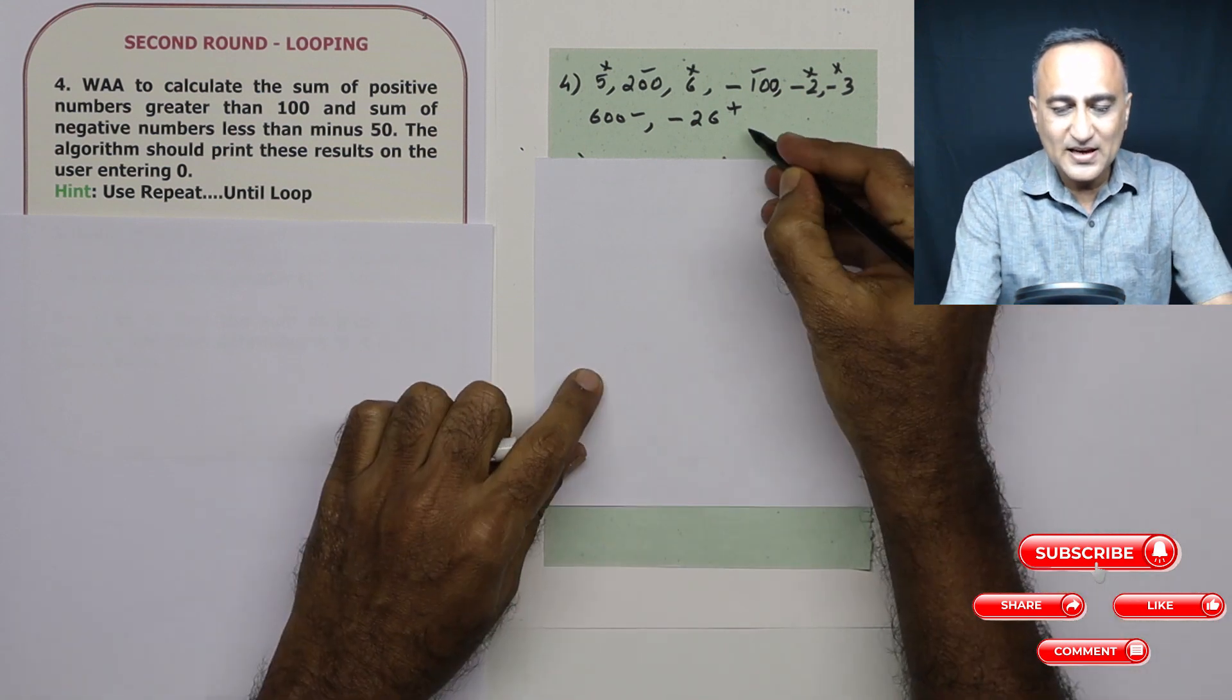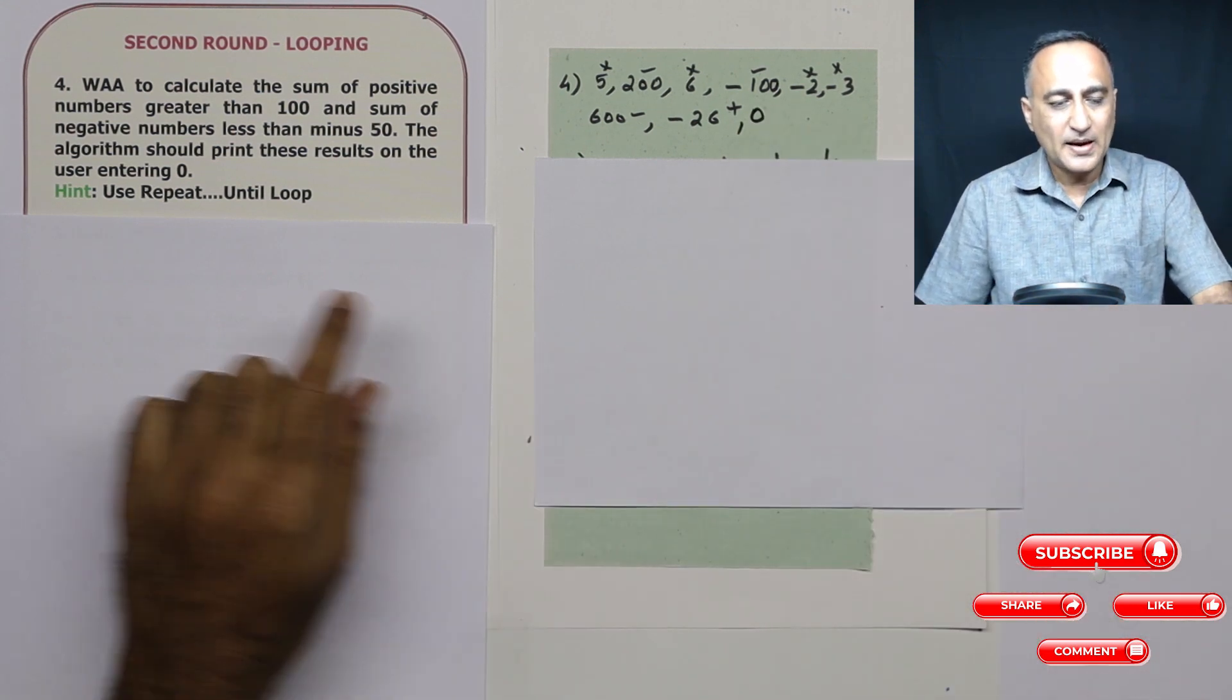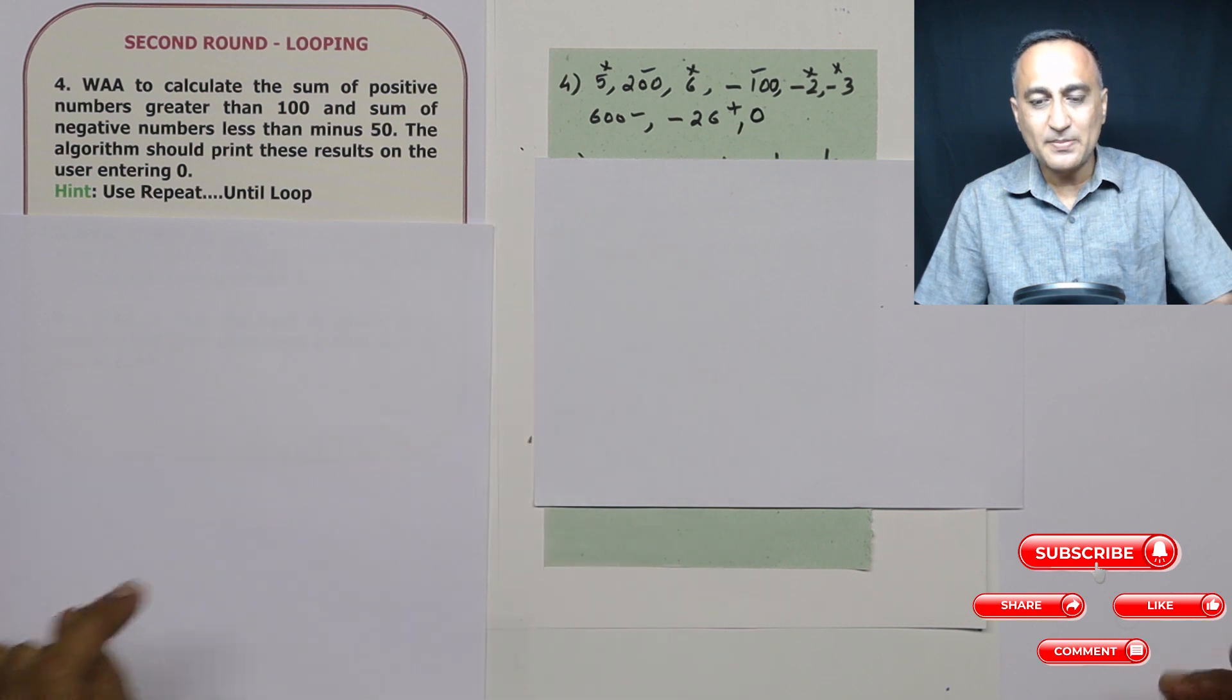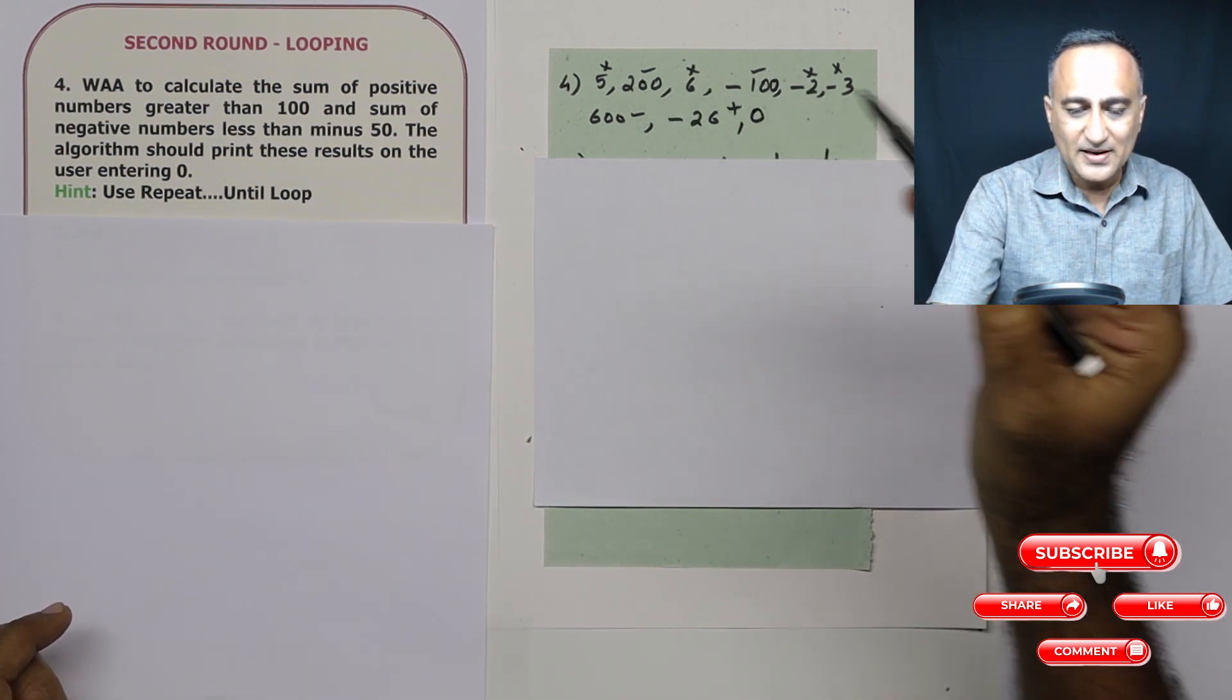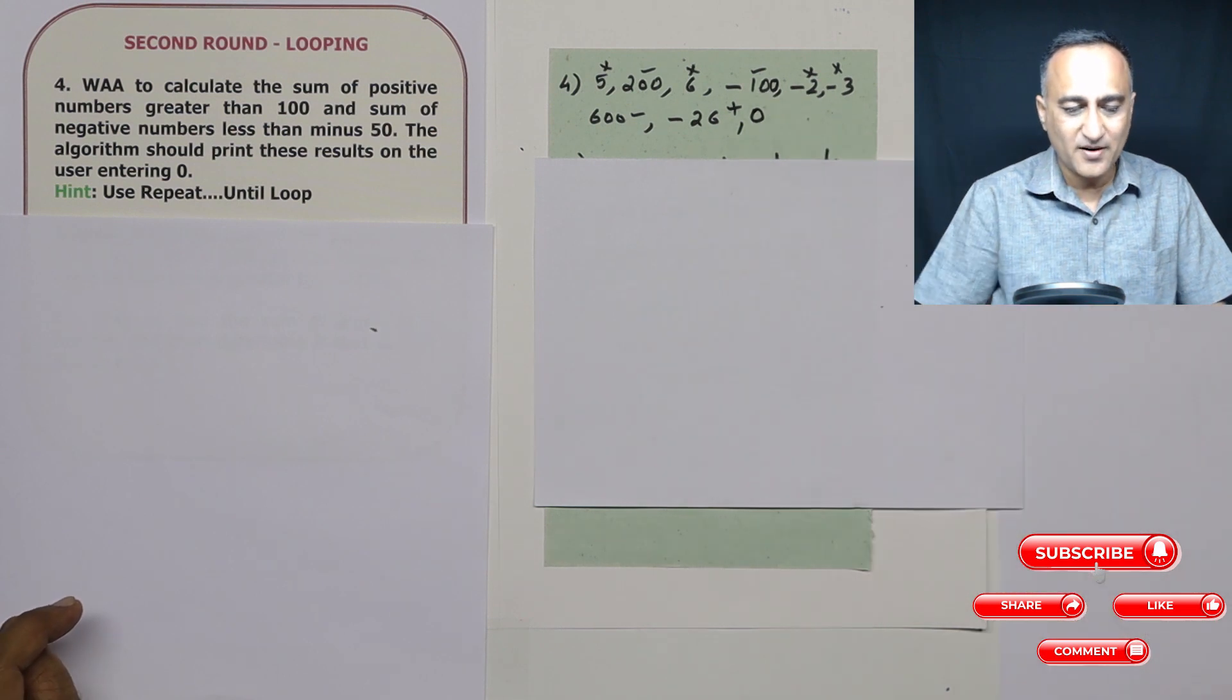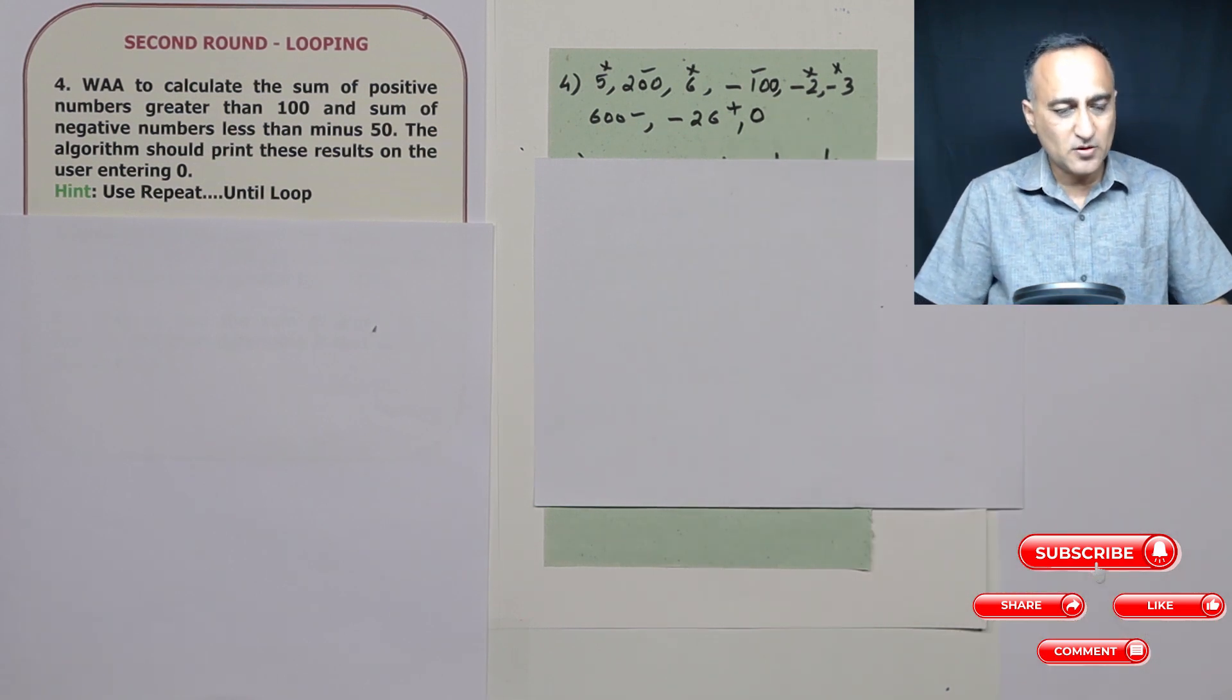And finally, let's say the last number happens to be zero. I am going to print the positive sum and negative sum. Only 200 and 600. Negative sum is only going to be minus 100. So that's all this problem is about.